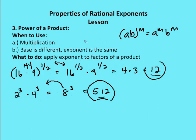Next property — power of a product. I have a product a times b, the two factors. I can remove the parentheses and apply the exponent to each of the factors: a to the m times b to the m. So 144 to the 1 half is the same as 16 times 9, all to the 1 half. That's 16 to the 1 half times 9 to the 1 half. 16 to the 1 half is 4, 9 to the 1 half is 3, and 4 times 3 equals 12.